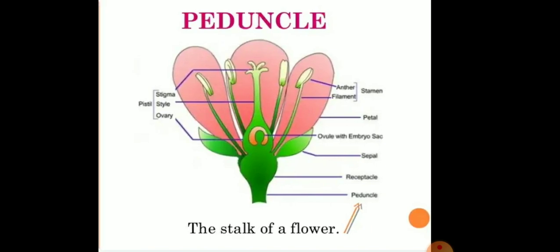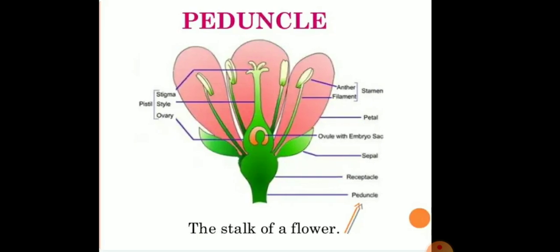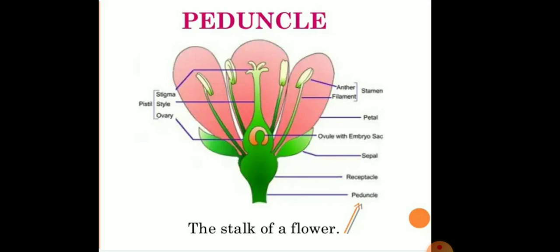The ripened ovary of a flowering plant which contains the seeds is called the fruit. Fruits are an important source of food for human beings. Some fruits contain only one seed while some contain many seeds. There are mainly three portions of a seed: first is the radicle, second is the plumule, and third is the cotyledon.